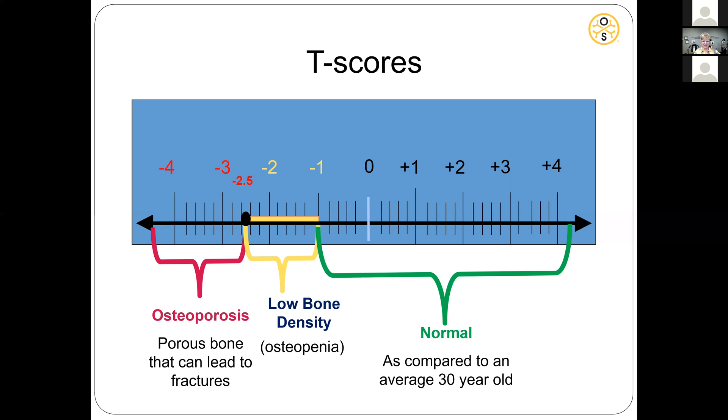When you get a bone density test, the results are reported as a T-score, which indicates how far away your bone density is from the normal. The normal is based on the bone density expected for an average healthy person at the age of 30, because peak bone mass typically is reached by the age of 30.